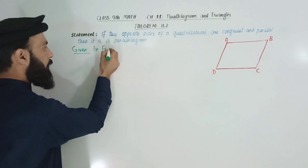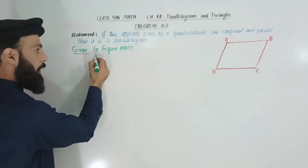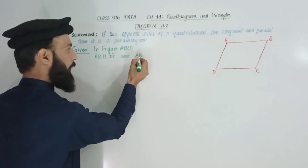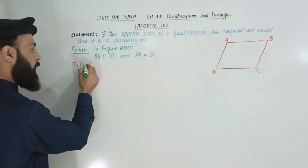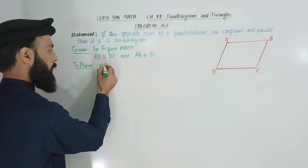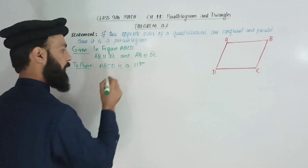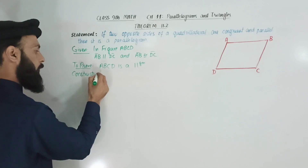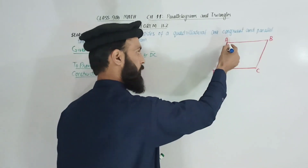Given: In figure ABCD, AB is parallel to DC and AB is congruent to DC. To prove: ABCD is a parallelogram. I am going to prove it by drawing diagonal AC.